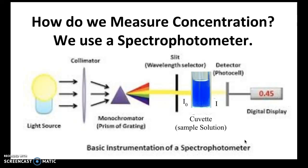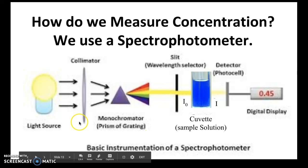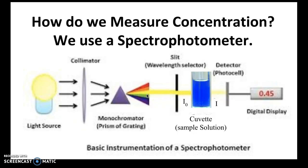We use a spectrophotometer. A spectrophotometer works by using a light source that breaks down light into different wavelengths. A wavelength of light is light at a certain energy — you probably know this from a rainbow (ROYGBIV), where red light has a longer wavelength and lower energy, while violet light has a shorter wavelength and higher energy.